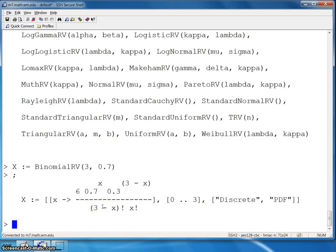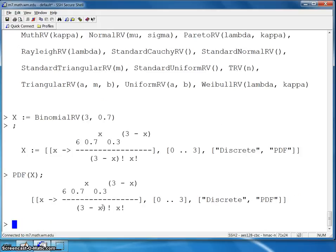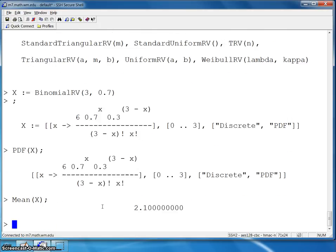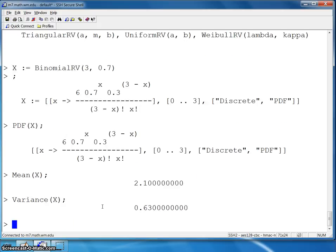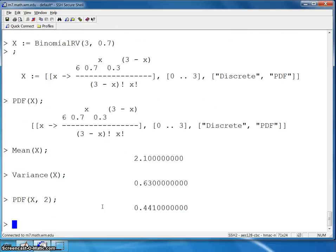Well, the first thing we want to do is, if we want to look at the PDF of x, it'll show you that list of three lists. And then if we want to calculate the mean of x, that's done in this fashion, and you get the 2.1. And to calculate the variance of x, you will get 0.63. And finally, if you want the probability that x will be equal to 2, you run the PDF command again, but this time you put in a 2, and that's where you will get the 0.441.